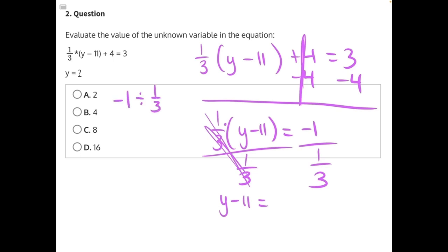Anytime you're dividing with fractions, you are actually multiplying by the reciprocal. And there's a little acronym you can use to help you remember: Keep your first number the same, change the operation from division to multiplication, and flip your fraction. So instead of negative 1 divided by 1/3, it's negative 1 times 3, which gives us negative 3.